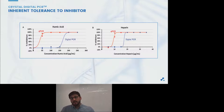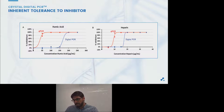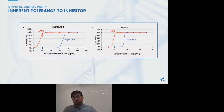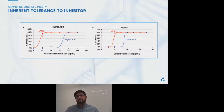Here is another graph showing on the y-axis the percentage of inhibition in qPCR and Crystal Digital PCR induced by humic acid or epirin, another well-known PCR inhibitor. In qPCR, we can see that inhibition occurs very quickly as the concentration of humic acid or epirin increases. In contrast, digital PCR is much more tolerant toward these PCR inhibitors, due to the digital endpoint data acquisition.